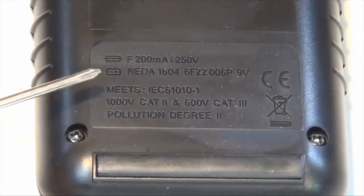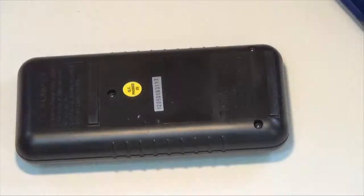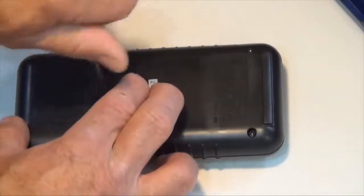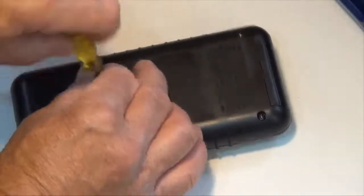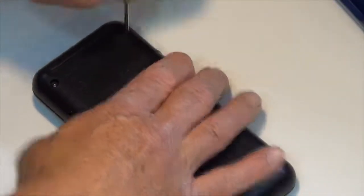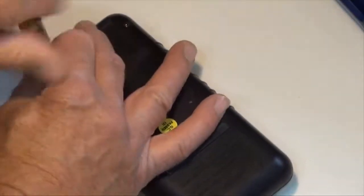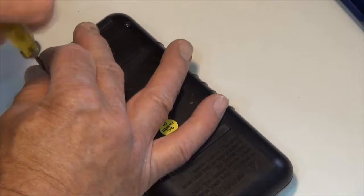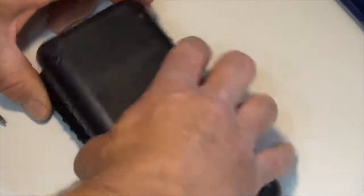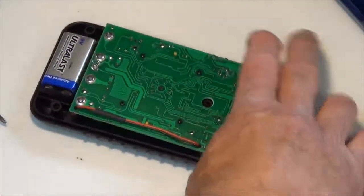I already knew that I needed a 9 volt battery. So let's take this apart. So using my Phillips screwdriver, I'm going to remove these three screws and lift the back case off very carefully from the multimeter.